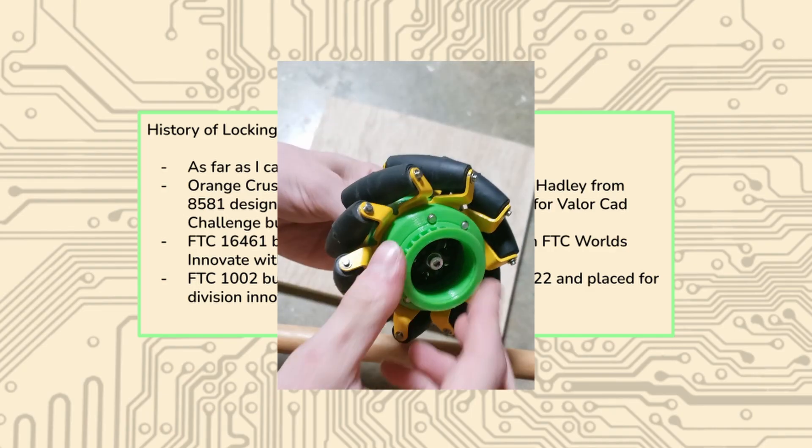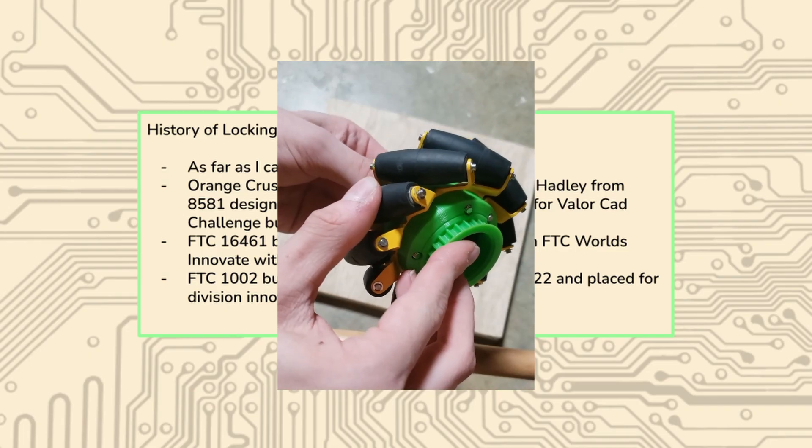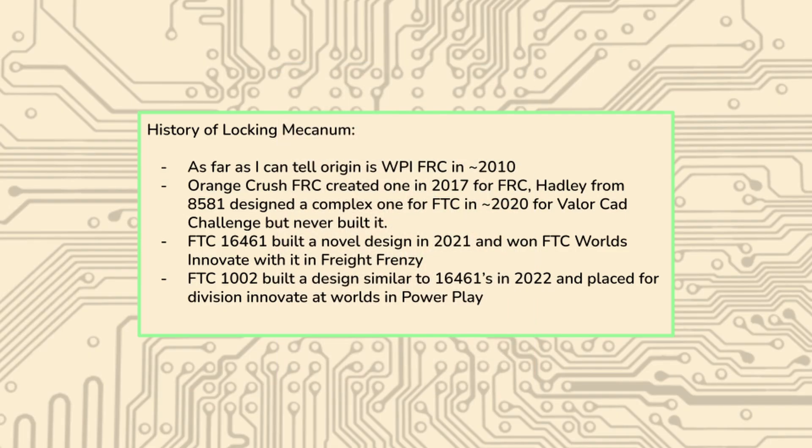So FTC 1002 actually exemplified this. They built a design very similar to ours in 2022, placed for Division Innovate at Worlds in Power Play and got a lot of benefits from it in general. I actually remember reffing a match at Alabama where they tipped themselves over by using locking mecanum because of the increase in acceleration. It really can do a lot for things like acceleration, but 1002 designed one, had a great time with it. It did take a couple months of work, but it was a lot easier based off of this precedent that I'm going to talk about in this video.